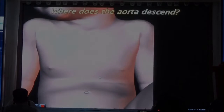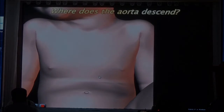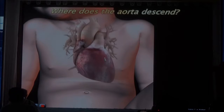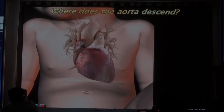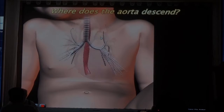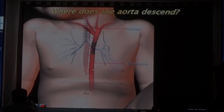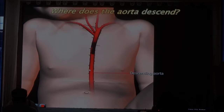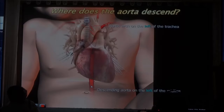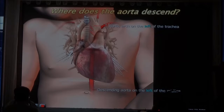So where does the aorta descend? Well, here we have the heart, and you see nothing between the aorta and the pulmonary. Here we have the trachea, and behind we have the esophagus, and now we have the descending aorta at this level. So normally the aorta should be on the left side of the trachea.